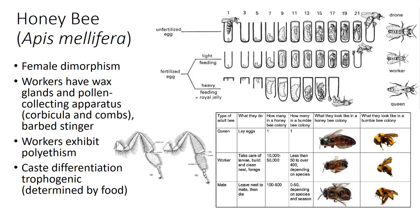Africanized honeybees are a subspecies that have an increased tendency to swarm, migrate, escape, and be more aggressive. They can easily take over a European honeybee nest. Originally found in South Africa, this subspecies has spread through the warmer areas of the U.S.